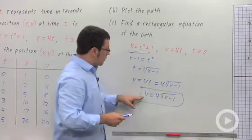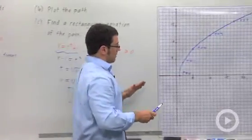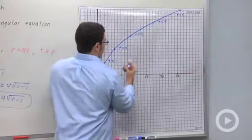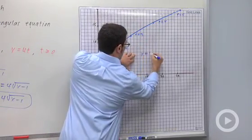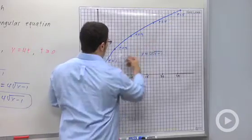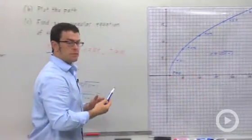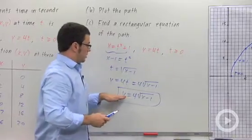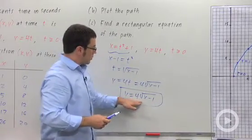but what it does represent is the actual shape of the path. Y equals 4 root x minus 1 is the actual path of the particle, but it doesn't tell you anything about the times. So something is lost when you find the rectangular equation of the path.